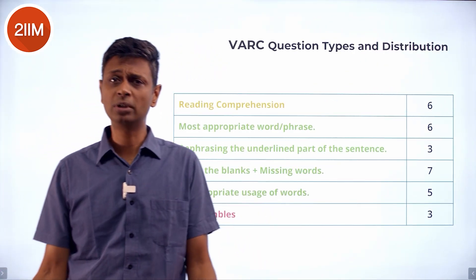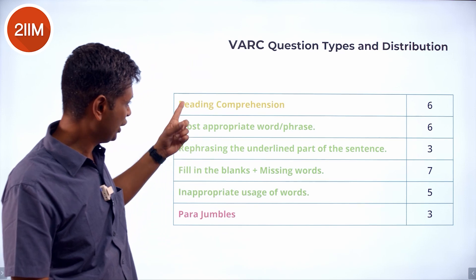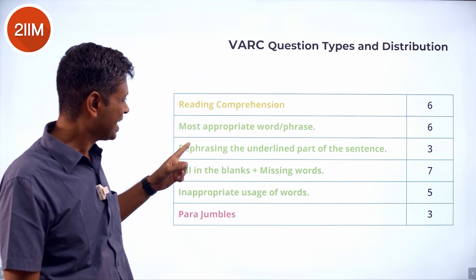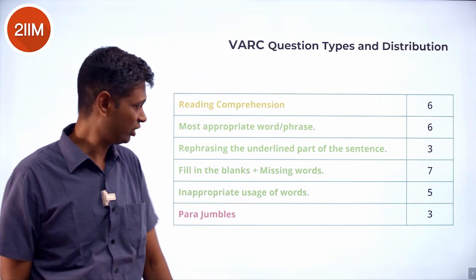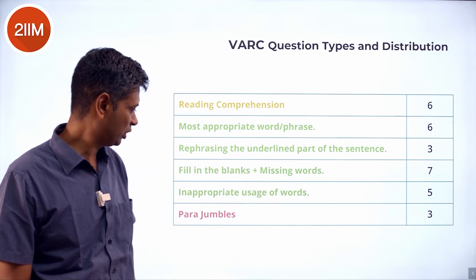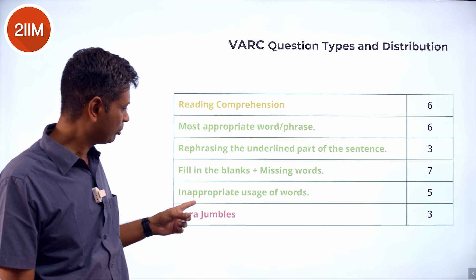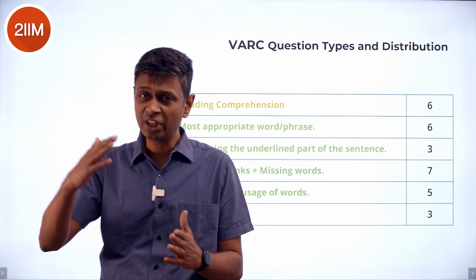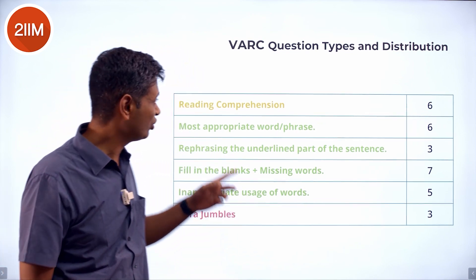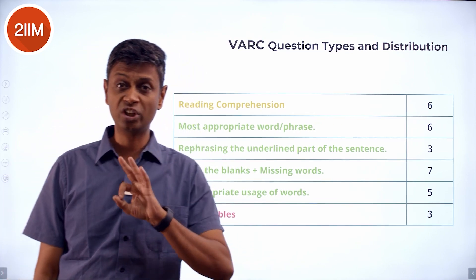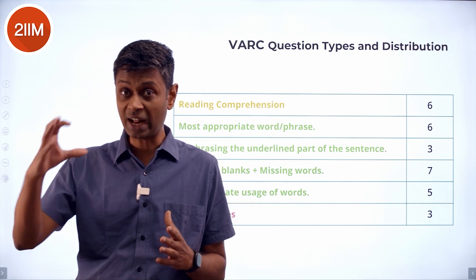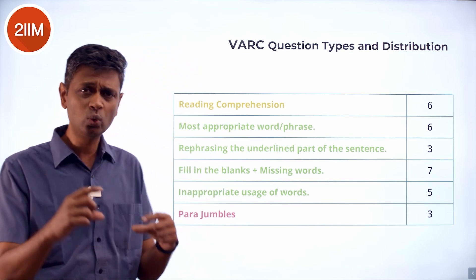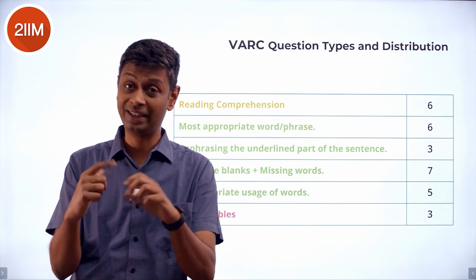In the verbal section, they have reading comprehension, most appropriate word or phrase, rephrasing the underlined part of the sentence, fill in the blanks, inappropriate usage of words, and para jumbles. Reading comprehension is straightforward — you don't need to know much theory. You need to have the ability to read, understand, and answer questions. Para jumbles test how four sentences make a paragraph, which is largely common sense.